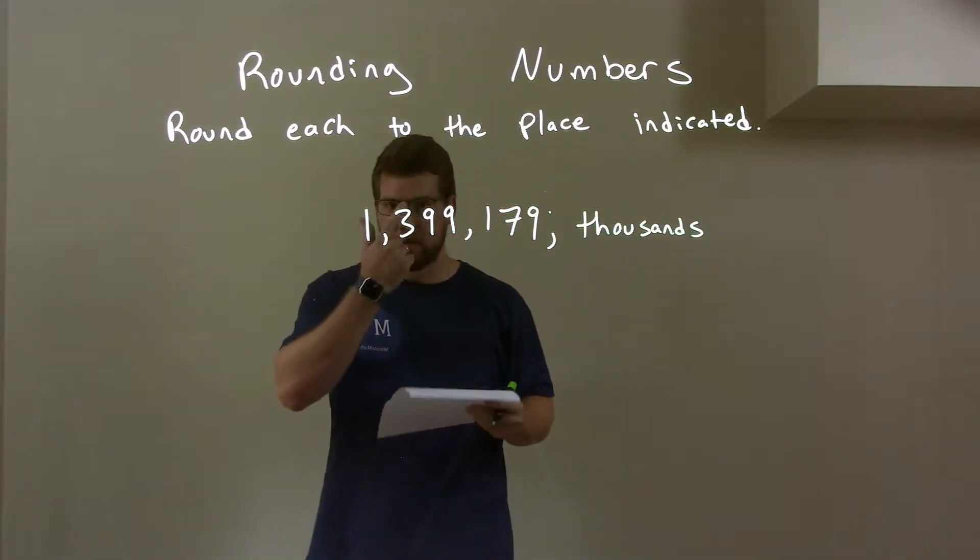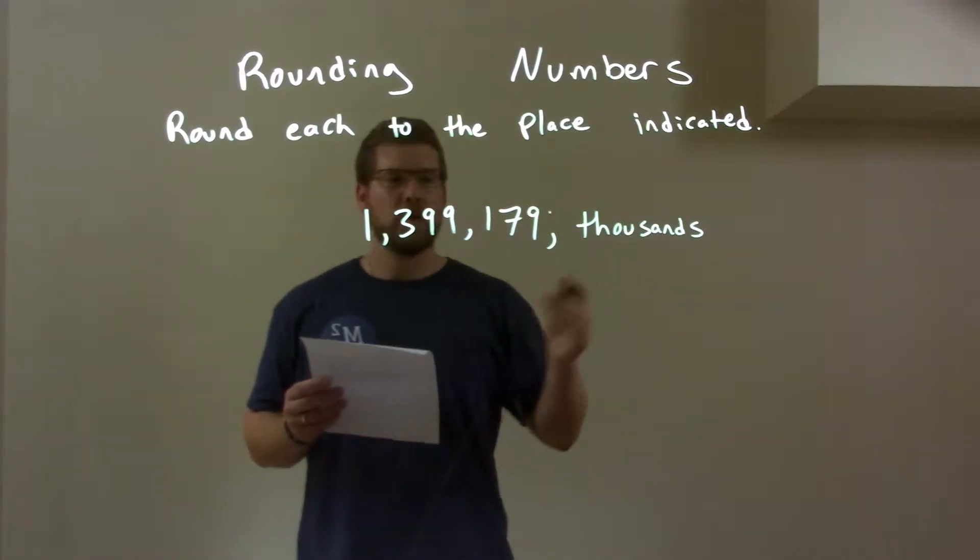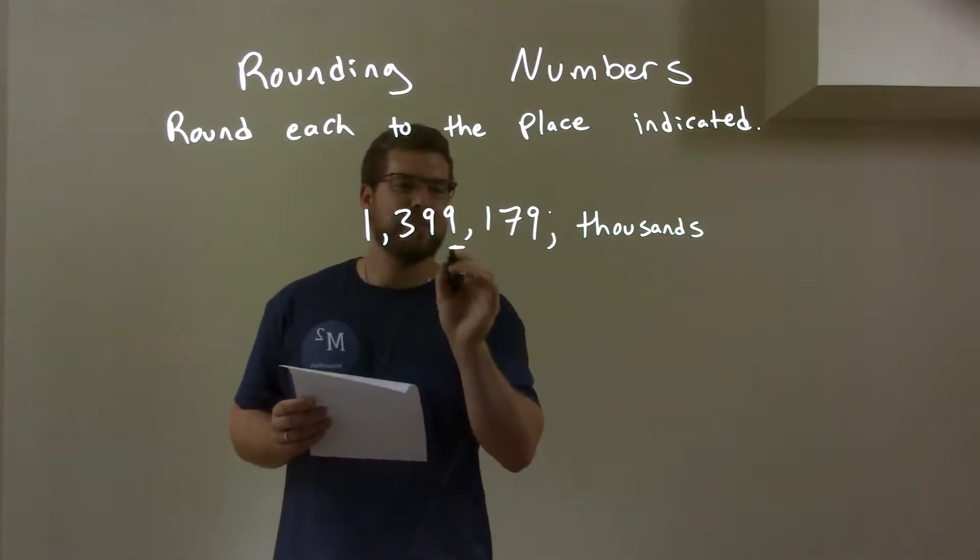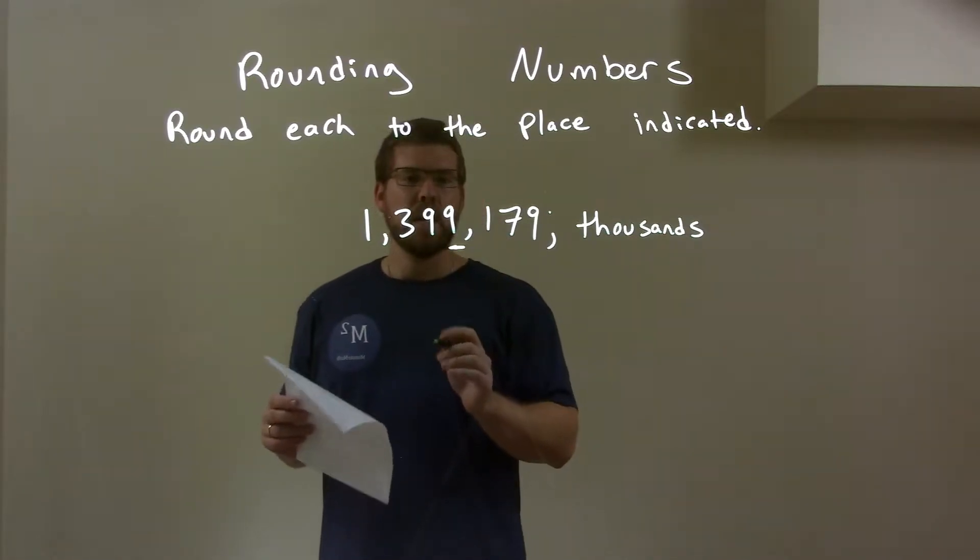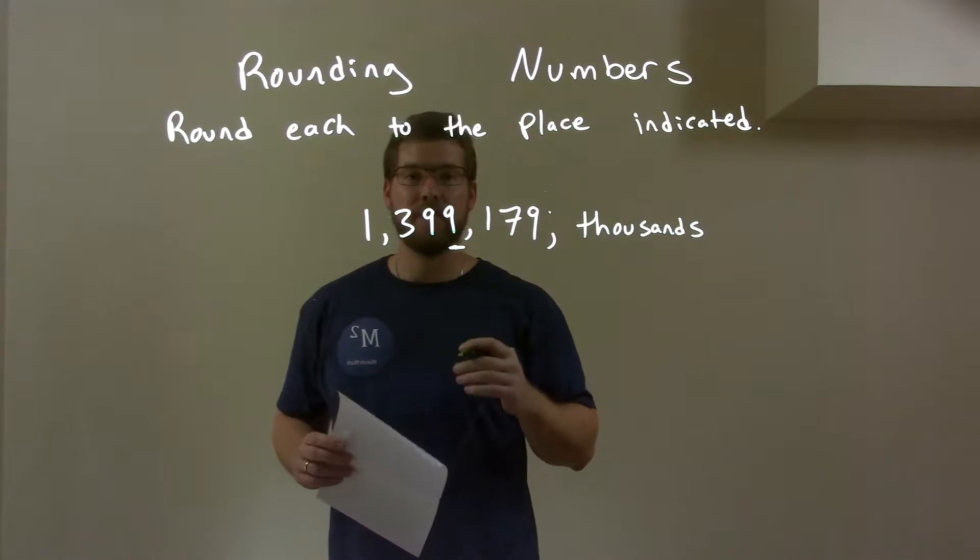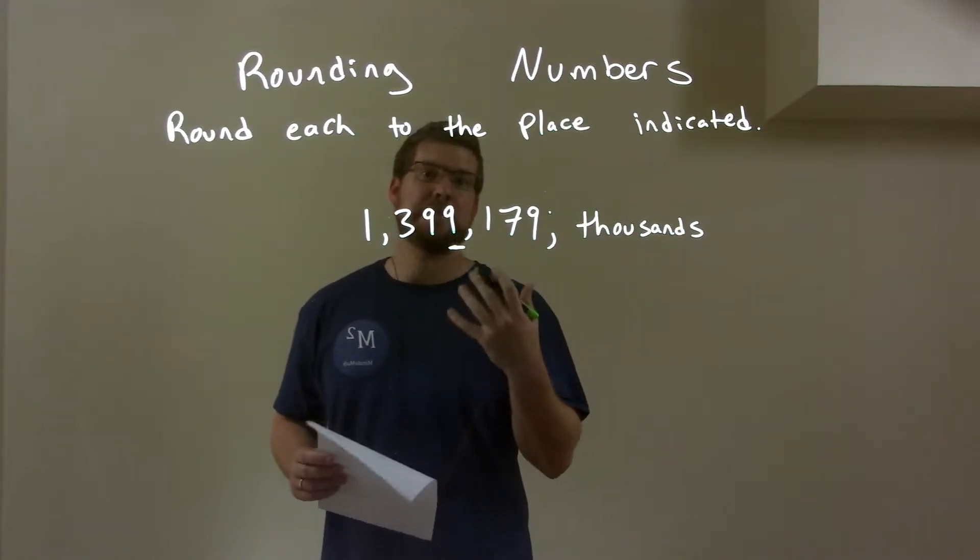Okay, we're rounding to the thousands. Well, I look at the thousands place and the thousands place right here is that 9, the second 9. So I look to the right of that 9, that's where I start and that's just a 1. That causes the 9 to round down or stay the same.